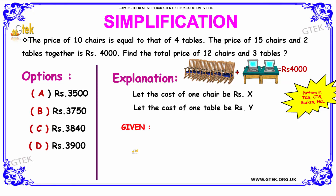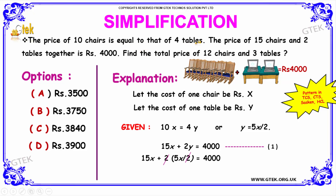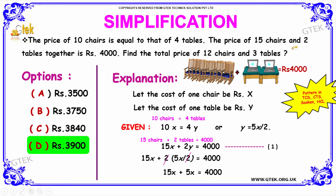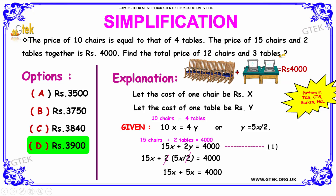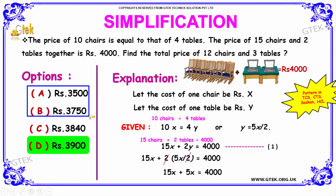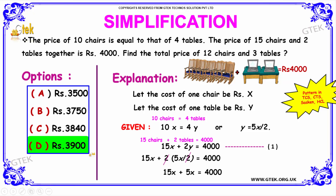The next problem is: the price of 10 chairs is equal to that of 4 tables. The price of 15 chairs and 2 tables together is Rs. 4000. Find the total price of 12 chairs and 3 tables. The options are: option A is 3500, option B is 3750, option C is 3850, and option D is 3900.